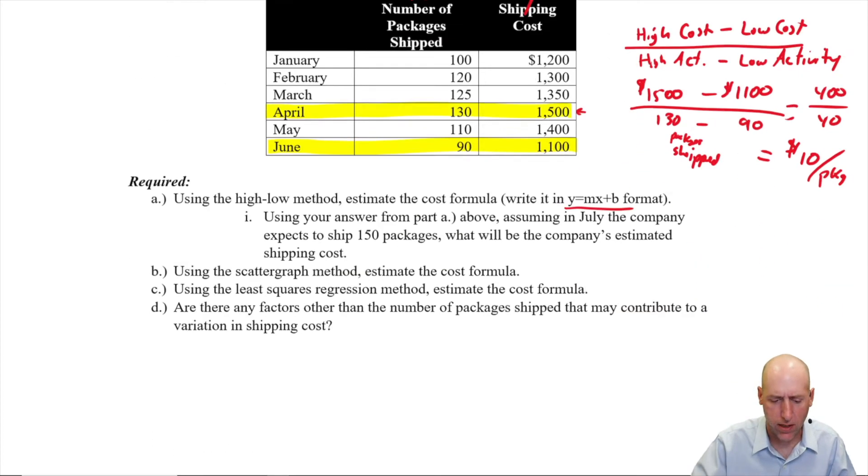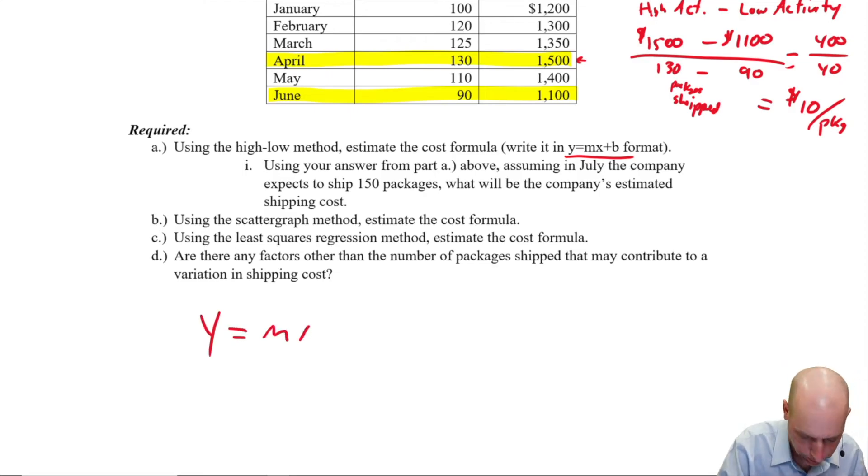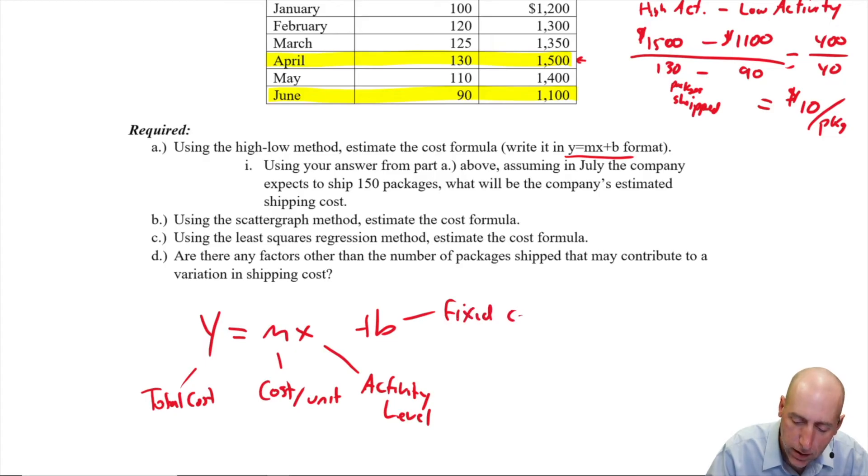Okay, so thinking about our cost formula, our formula for a line, it's y equals mx plus b. Let's remember something. Y is our total cost. M is our cost per unit. X is the number of units, the activity level, I should say. Number of units is often the activity level. So it's like in this case, the number of packages, but I'll use the word activity level. And b is our fixed cost.